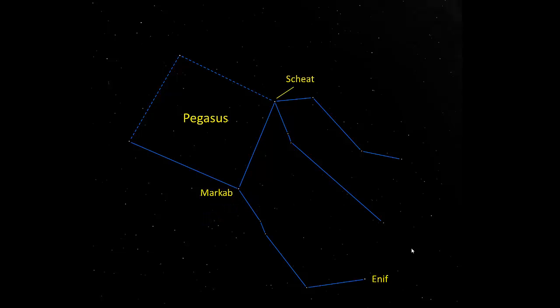Scheat, be careful how you pronounce that one. That's the horse's shoulder. Algenib, the flank, and Alpheratz. Over here is the navel of the mare. At one time Alpheratz was in the constellation of Pegasus, but now it's just barely over the border in the constellation of Andromeda. But it's still part of the asterism that we use for Pegasus.